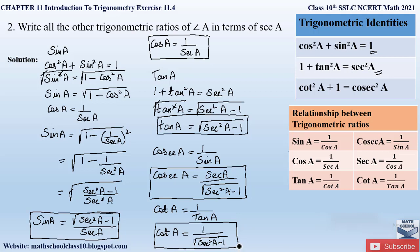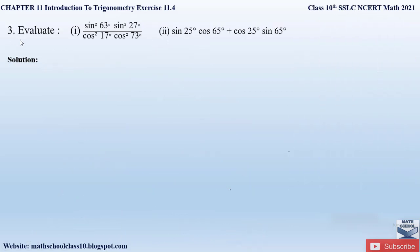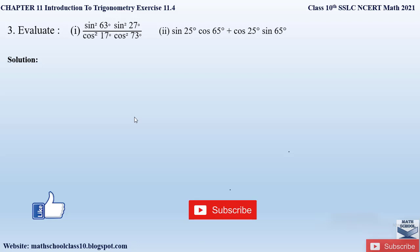This is how we solve this problem — expressing all trigonometric ratios in terms of secant using trigonometric identities and the relationships between ratios. If you have any further doubts, comment below. In my next video I will solve question number 3 from exercise 11.4, chapter 11, Introduction to Trigonometry. Till then, do like my video, subscribe to my channel, and hit the bell button to get the latest updates as I complete the whole syllabus for class 10 mathematics. Thank you.